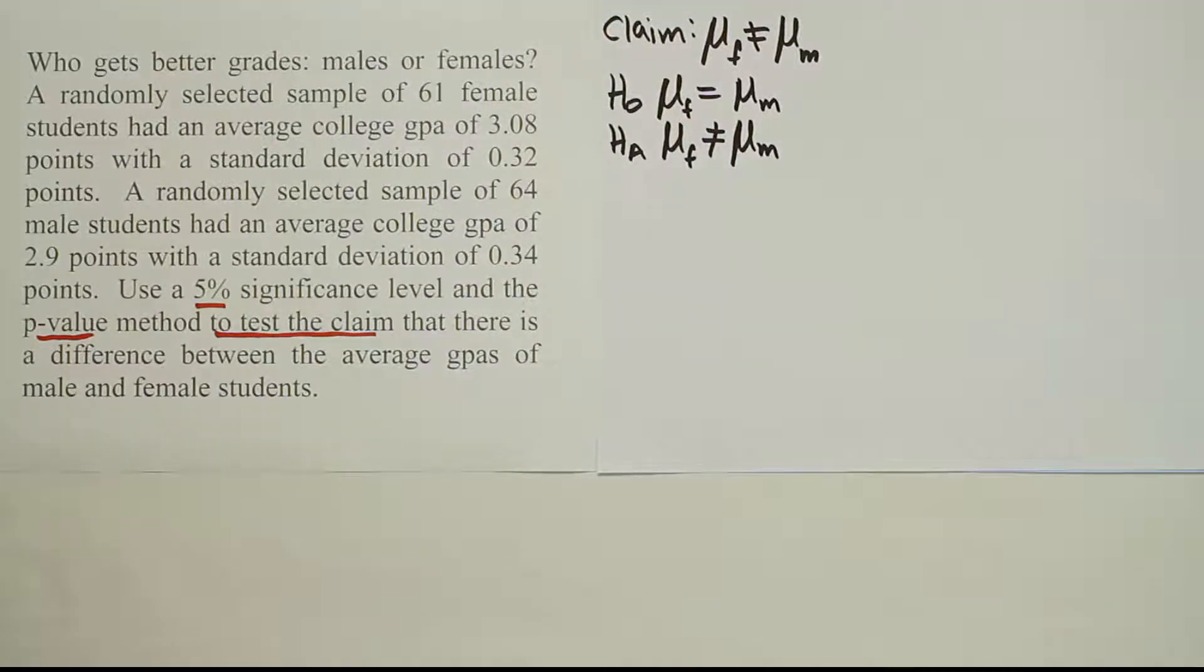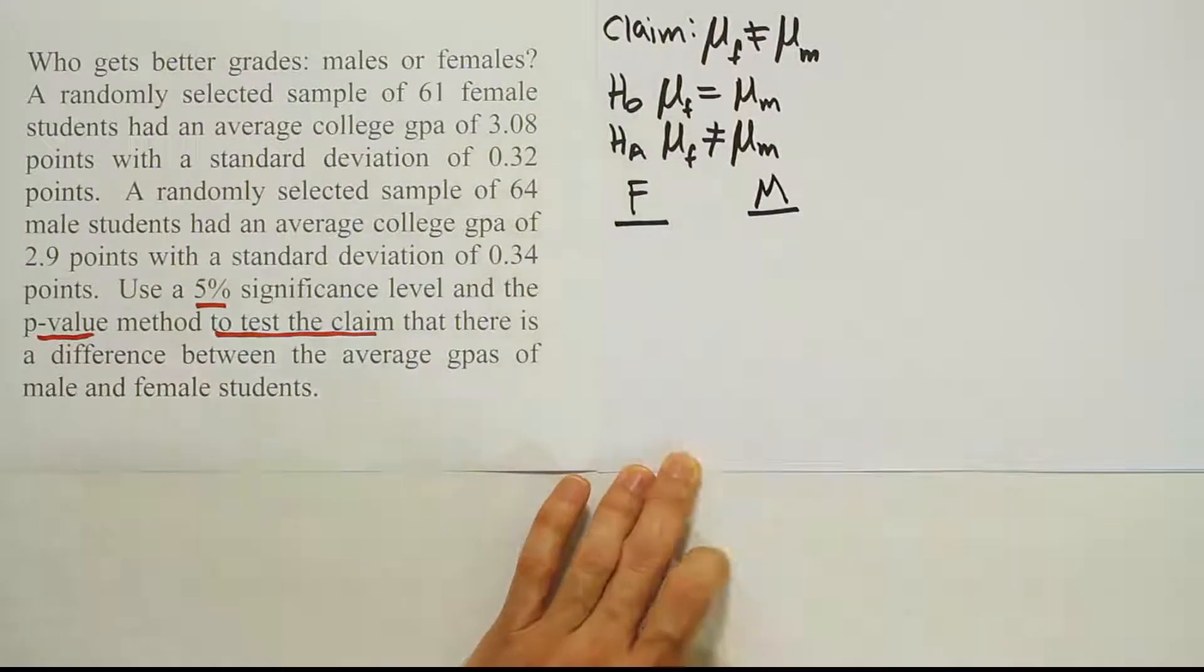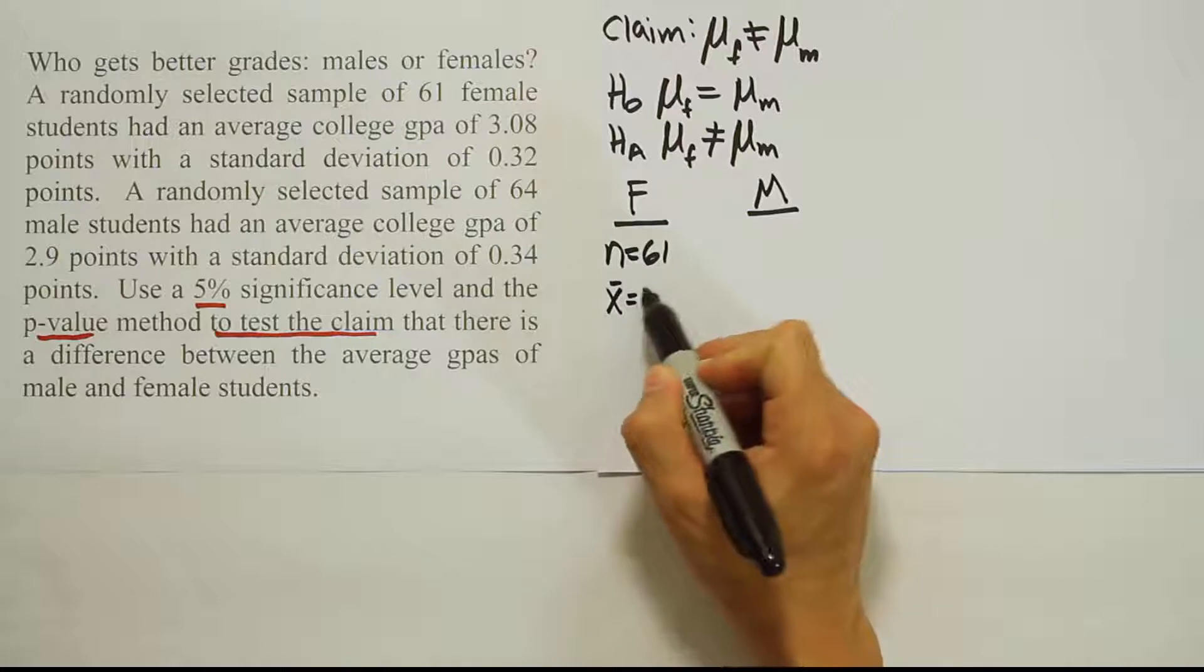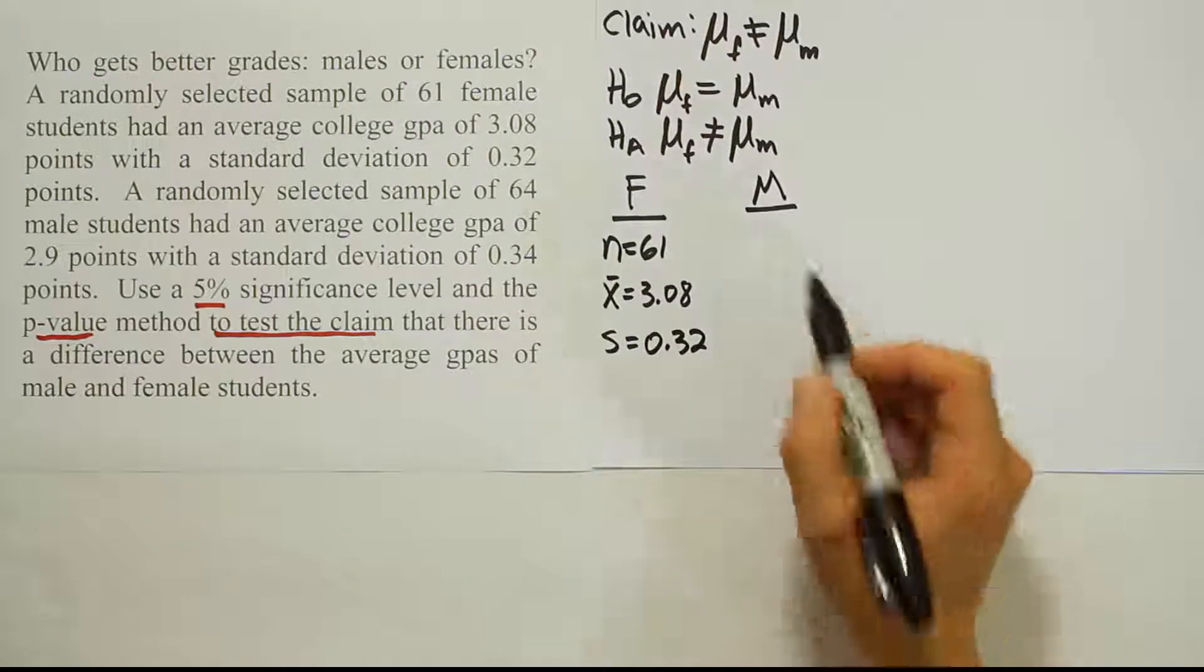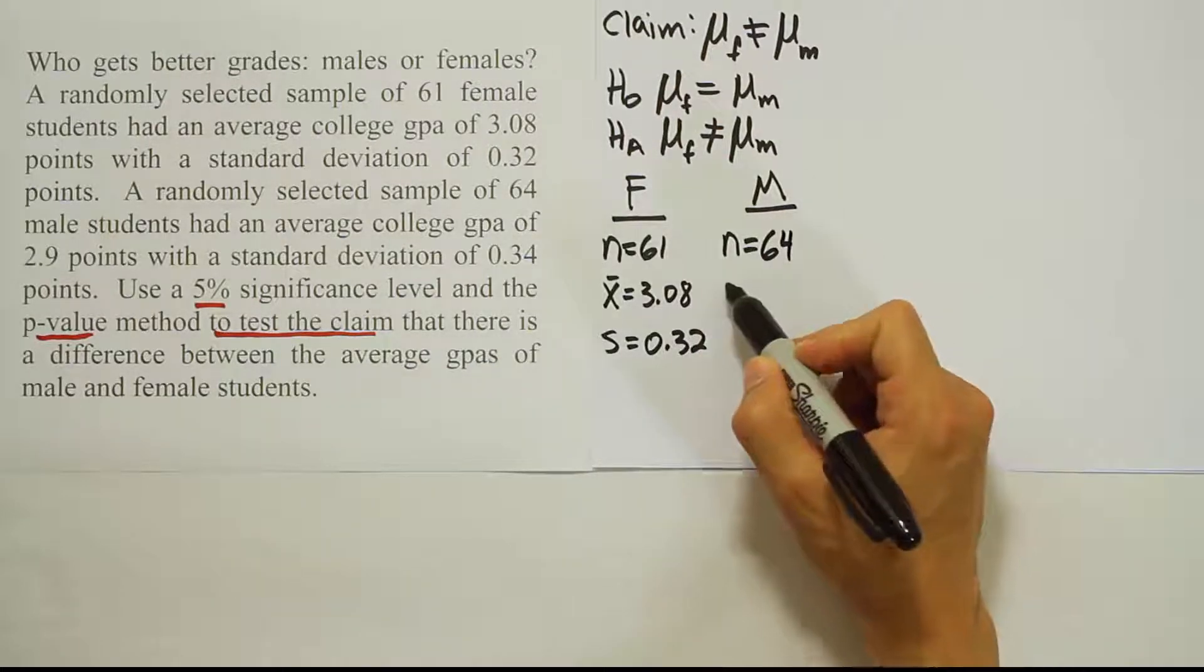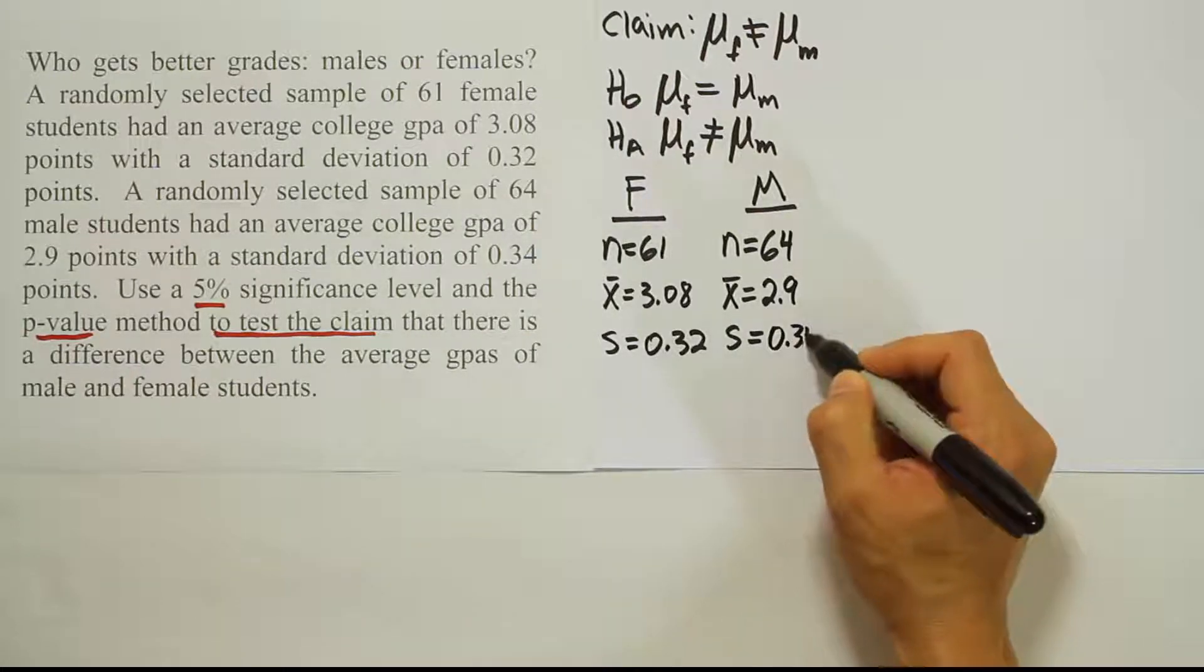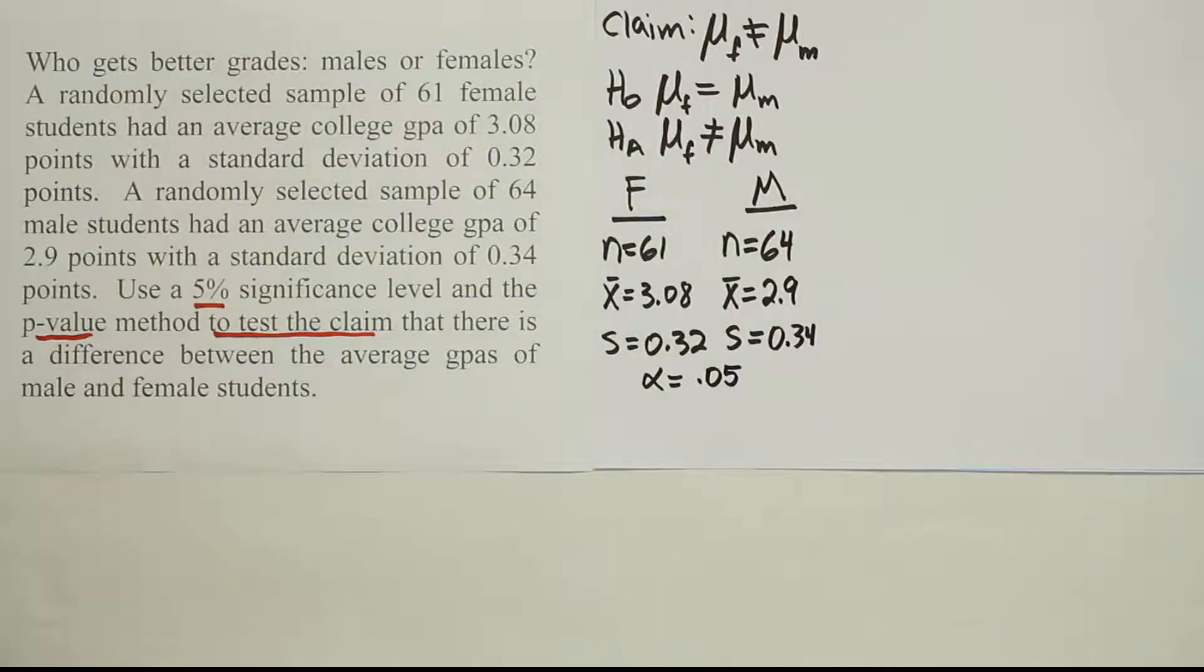Now from here, our next step is to collect the data. So let's get the data for both females and males. We're going to take that right from the problem. The females had a sample size of 61 with an average of 3.08 and a standard deviation of 0.32. Then the males had a sample size of 64 with a sample mean of 2.9 points and a standard deviation of 0.34. And of course the alpha here is 5%, 0.05. So we have all the data now.